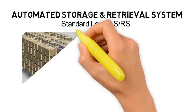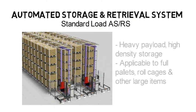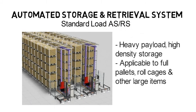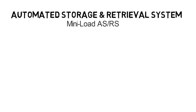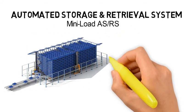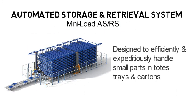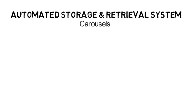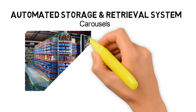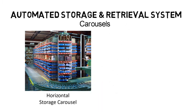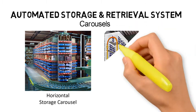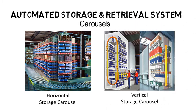There are different types of ASRS. A standard load ASRS is designed for products fitting into defined, uniformly sized containers — this can be in the form of full pallets, roll cages, and any other large-size container holding a heavy payload. A variation is the mini load ASRS, designed for small products fitting into defined, uniformly sized containers such as totes, trays, and cartons. Carousels are another type of ASRS. There are two distinct types: horizontal storage carousels, which rotate and store products in a horizontal plane, and vertical storage carousels, which rotate and store products in a vertical plane.